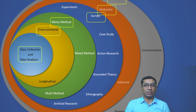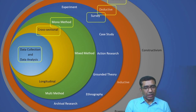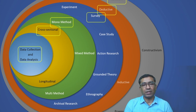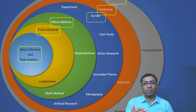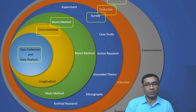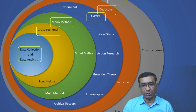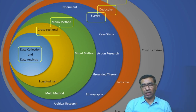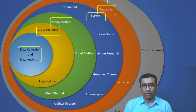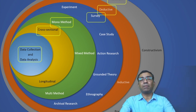I hope this video is very clear. If you have any questions, you can ask me. You have to mention your research design layer-wise — for example, layer one: positivism, which is your research philosophy; research approach; research strategy. Write each answer in the comment box. Thank you very much, and I hope this lecture is very clear. If there is any question, you can write it down in the comment box. Thank you and have a very nice day.